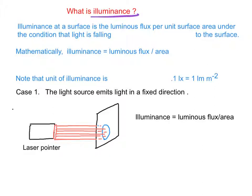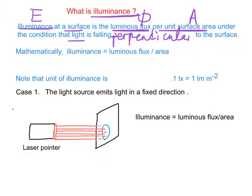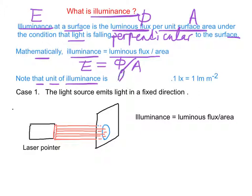What is illuminance? Illuminance E at a surface is the luminous flux per unit surface area, under the condition that the light is falling perpendicularly to the surface. Mathematically, illuminance E equals luminous flux per unit area, so E equals φ over A. The unit of illuminance is lux, in short form lx. And 1 lux equals 1 lumen per meter squared.